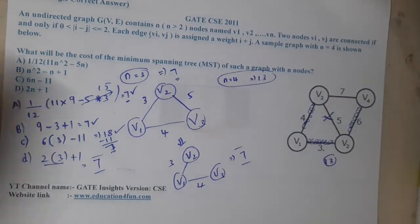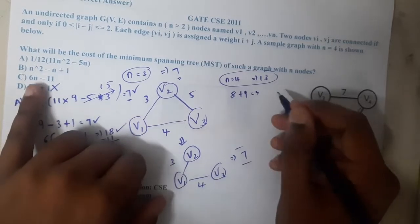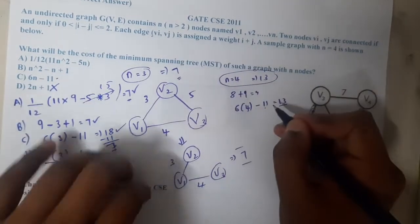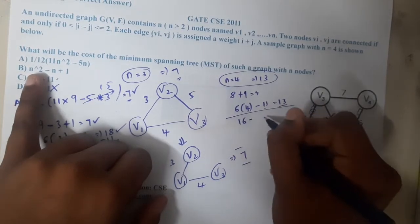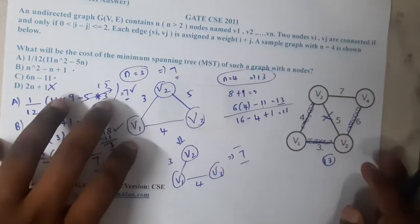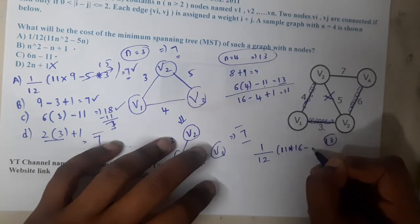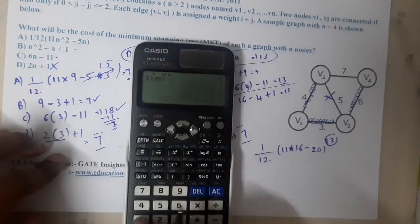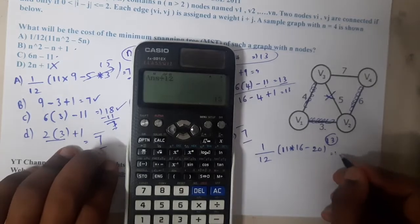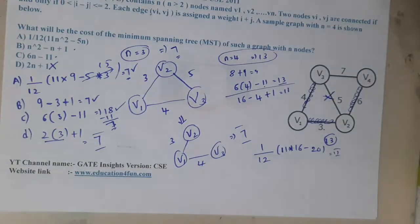Let us check the options with n equal to 4. Option D: 2×4 + 1 = 9, which is not 13, so option D is eliminated. Option C: 6×4 - 11 = 24 - 11 = 13 — still matches. Option B: 16 - 4 + 1 = 13 — still matches. Option A: (11×16 - 5×4)/12 = (176 - 20)/12 = 156/12 = 13 — still matches. Three options remain.